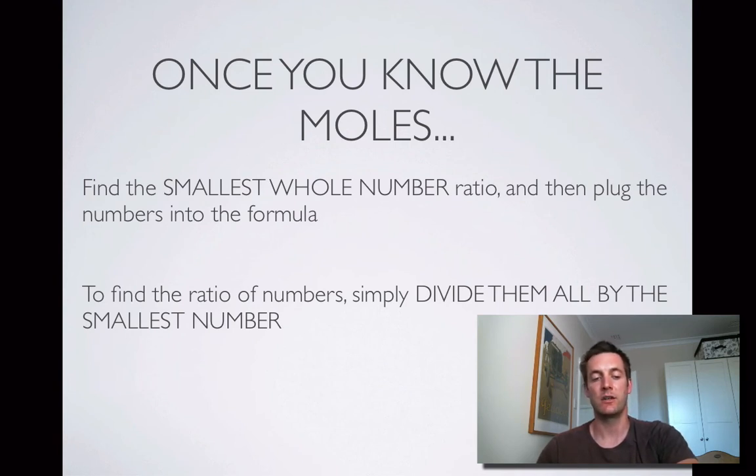So let's say that I got a ratio like the one I was looking at before of 1 to 2 to 1, then whatever my elements were, x, y, z, I'd be putting those numbers into the formula.